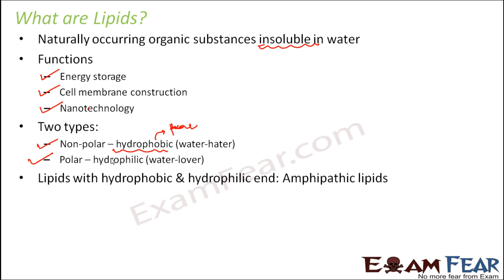However, there are certain lipids which have both a hydrophobic and a hydrophilic end — one end is hydrophobic and the other end is hydrophilic. These kinds of lipids are known as amphipathic lipids. When I start explaining the structure of the plasma membrane, I'll talk about these hydrophobic and hydrophilic ends, so you should have a basic idea. When we talk about the structure of plasma membrane, we will talk about amphipathic lipids.